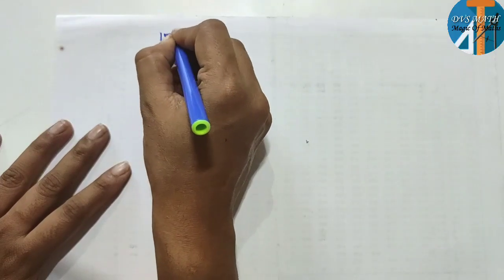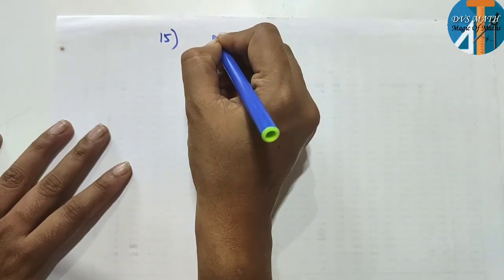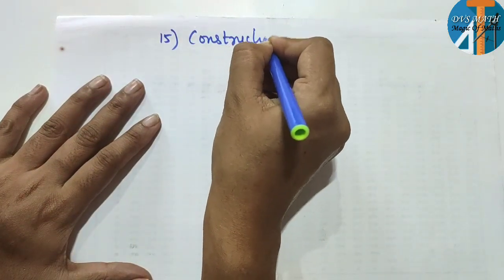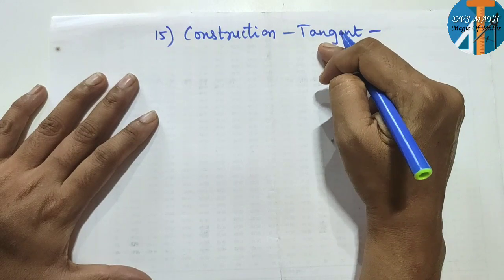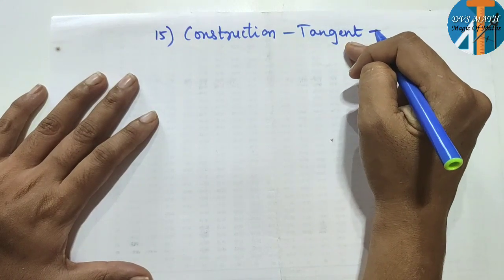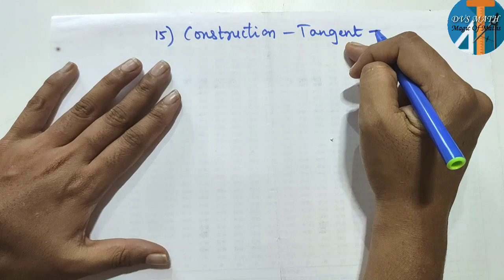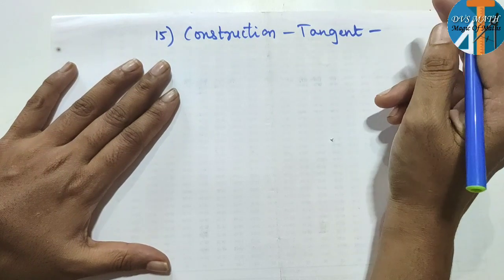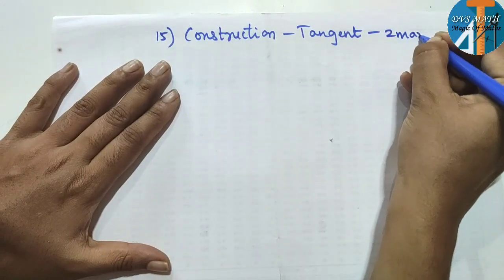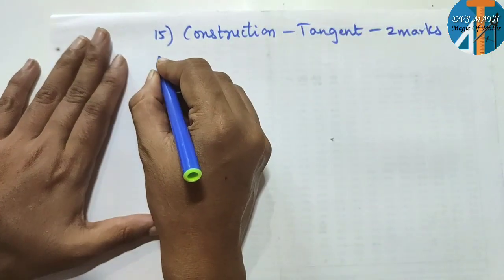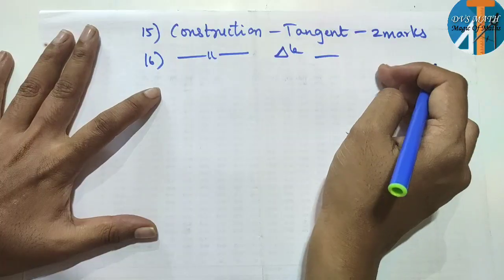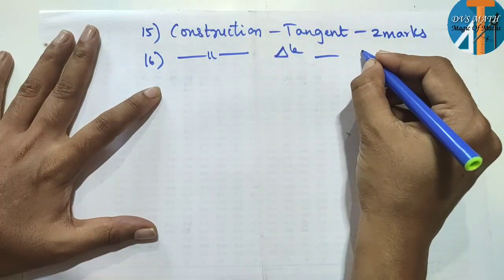Question number 15 is the construction lesson. In construction, two types will come: one is angle construction and one is distance construction. Watch my construction lesson video and you can easily revise it. For tangent construction, that is two marks easy to get. For triangle construction, that is three marks easy to get.